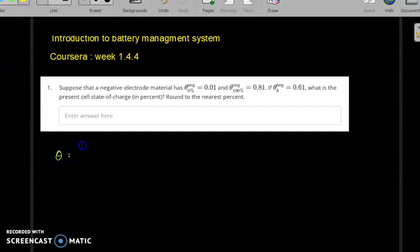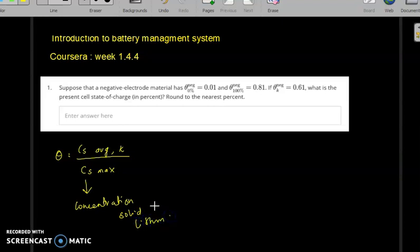Theta is just a ratio of Cs average at one point, at one state of the battery, divided by Cs maximum. Cs indicates the concentration of solid lithium. Theta is a stoichiometric ratio, a dimensionless quantity.